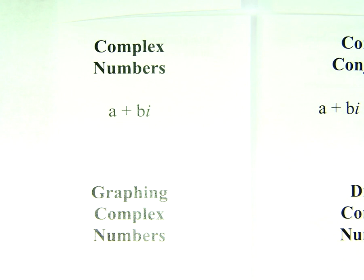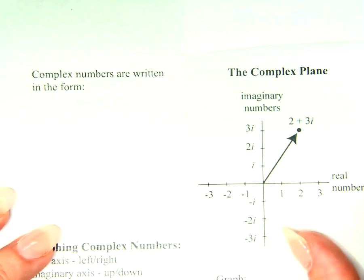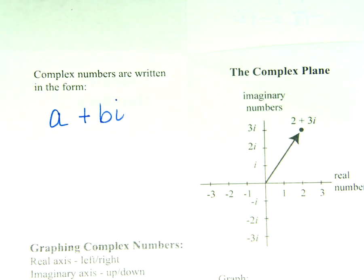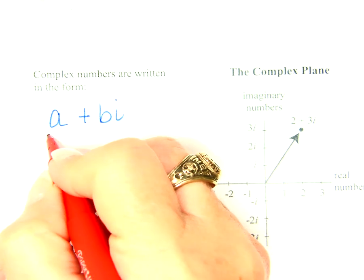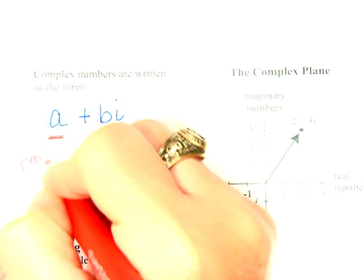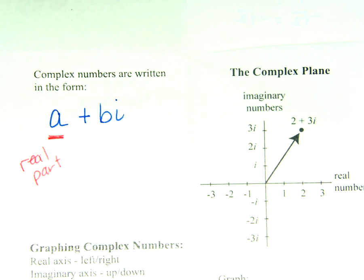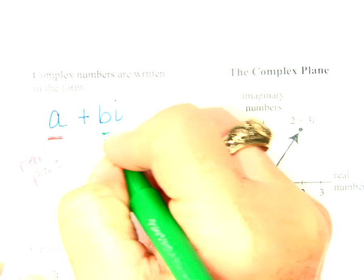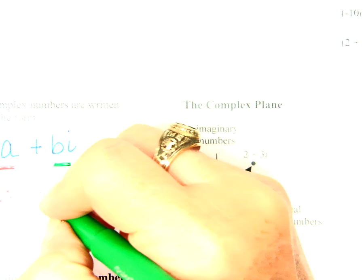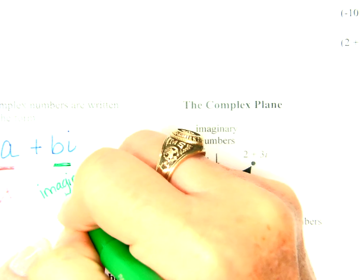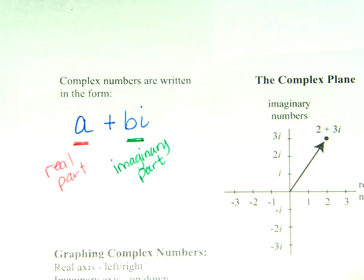Let's go down to the next tab: complex numbers, a plus bi, and graphing complex numbers. Complex numbers are written in a very specific form: a plus bi. The a is the real part. The bi is the imaginary part. How are you going to be able to tell which one is the real part and which one is the imaginary part? The one with the i — that's the imaginary part.